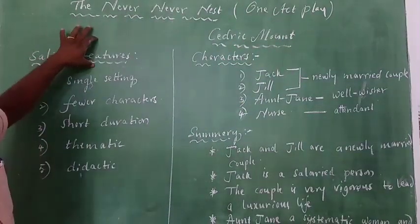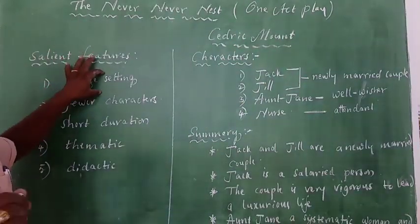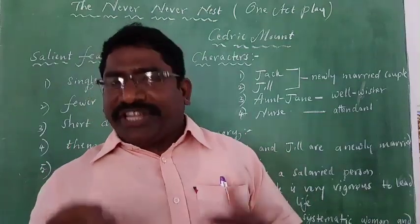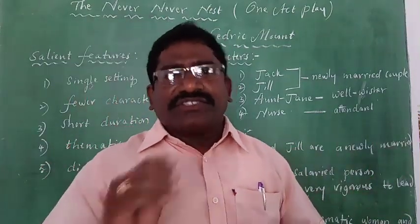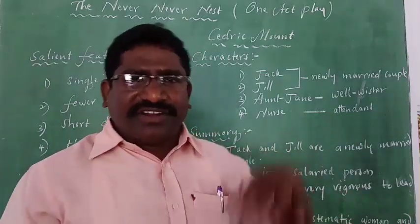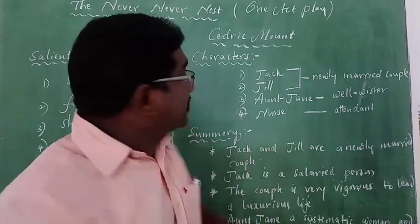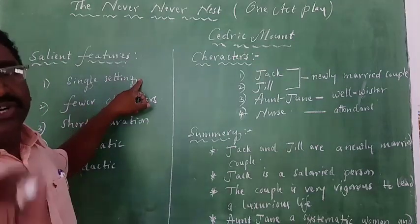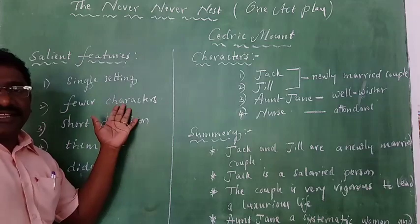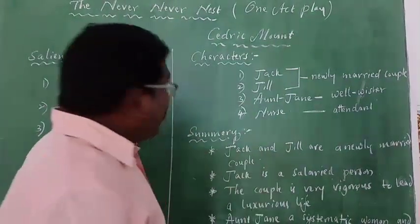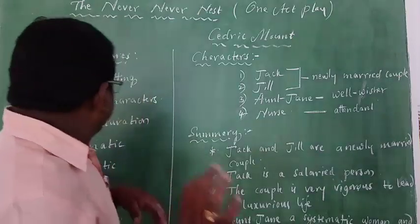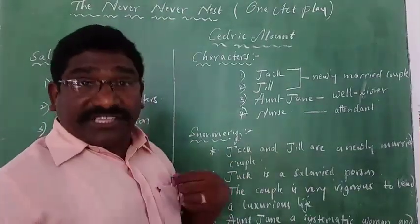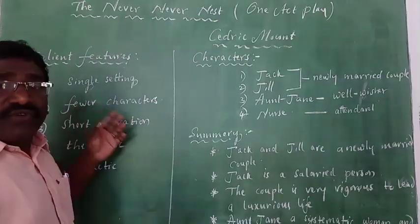What are the salient features of a one-act play? First, a one-act play must have a single setting. Setting is the place where the action takes place. For example, in a movie, there are many settings — one song shot in America, one in Hyderabad, one in Amsa, one in Rayalaseema. But a one-act play must be played in one single setting that should not be changed. Second, fewer characters. In a drama, more characters are there, but in a one-act play, maximum 4 or 5 characters must be there.